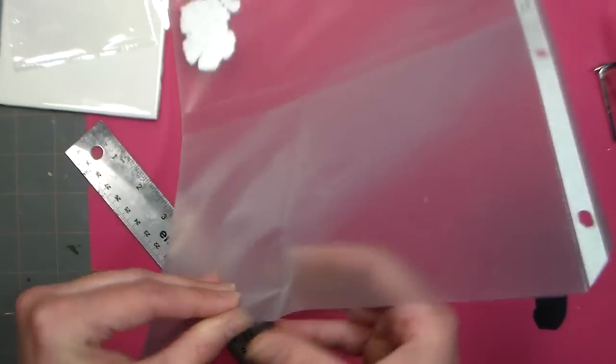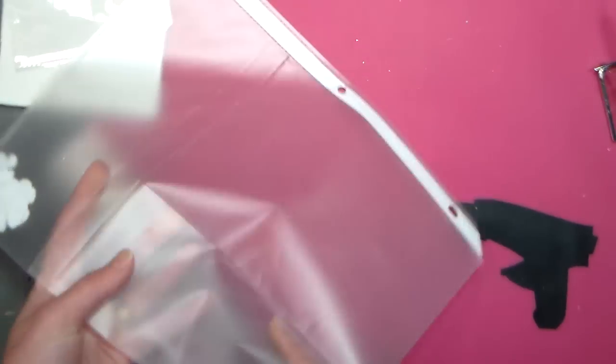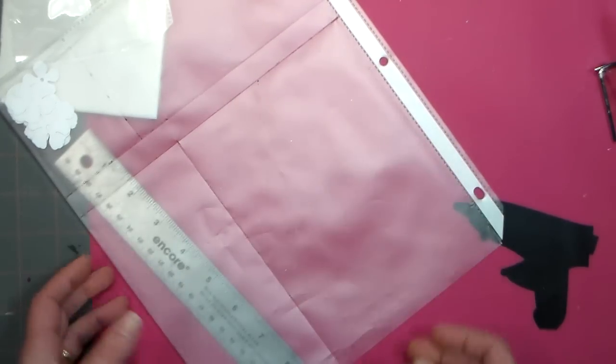But here we've got a nice sealed pocket. I probably, I think this would actually pull apart pretty easily if I wanted it to, but see you get a nice little pocket that we could actually store things in. If you want to make like storage for rubber stamps, you want to have it exactly custom you can do that as well.